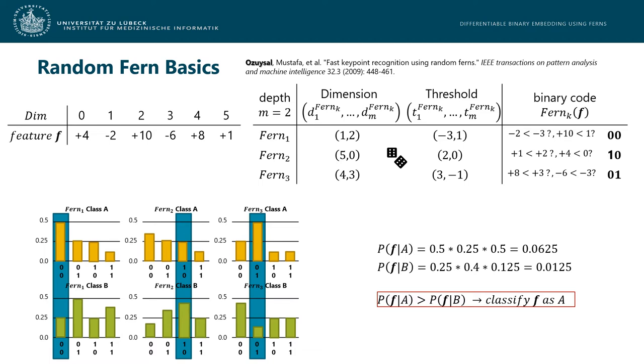The first randomly drawn set specifies a random subset of the input feature dimensions that each fern will consider and the second set contains a number of thresholds against which the respective feature values will be compared.